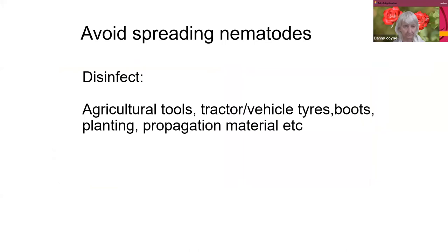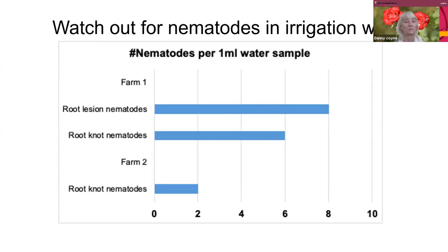It's important to avoid spreading nematodes on your farm or in your greenhouse. Nematodes can be spread with tiny soil particles on tools, boots, et cetera, so that's good to be aware of. Also, nematodes are sometimes found in irrigation water — that's important to sample.